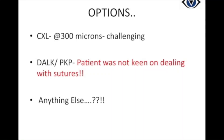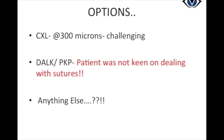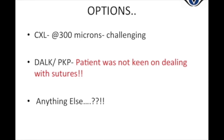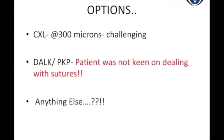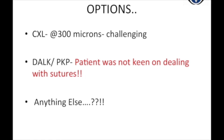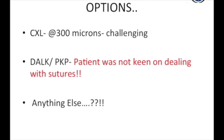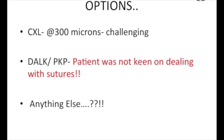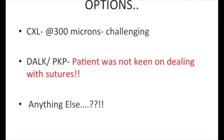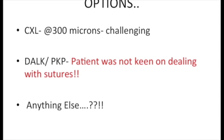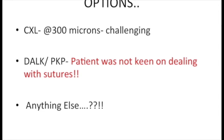What options do we have for this young boy with progressive keratoconus? Collagen crosslinking for a sub-300-micron cornea may not be an ideal procedure, and the patient didn't want to deal with sutures. Is there anything else that can be considered here?